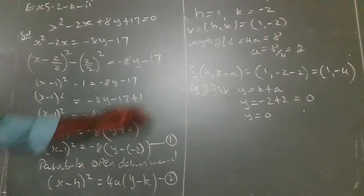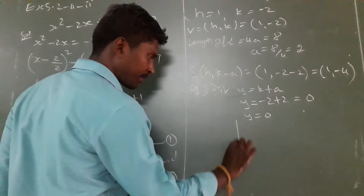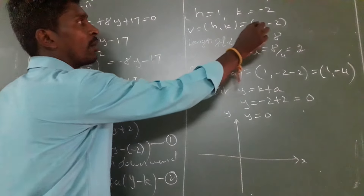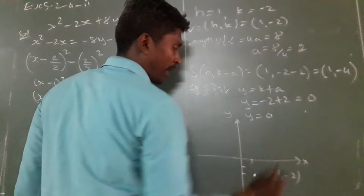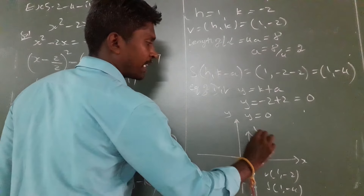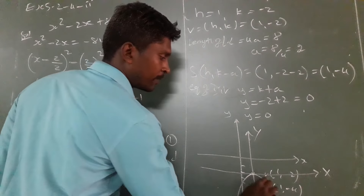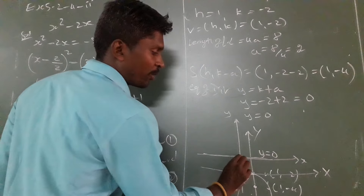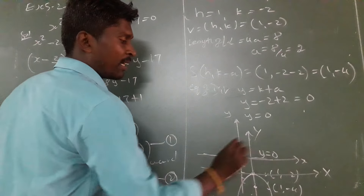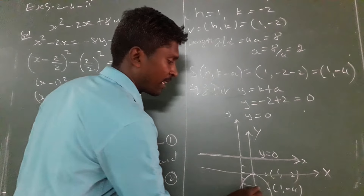So y equals 0. The length of the latus rectum is 4a equals 8. Now draw a rough diagram: take x and y axes. Vertex is (1, minus 2), so mark 1 on x-axis and minus 2 on y-axis. Focus is (1, minus 4). Through the vertex draw a vertical line as capital Y-axis and a horizontal line as capital X-axis. The vertex is here, focus is below, so the directrix should be above — at y equals 0, which is the x-axis. This is the equation of the directrix of the given parabola, and through that we can draw the latus rectum with endpoints L and L'.